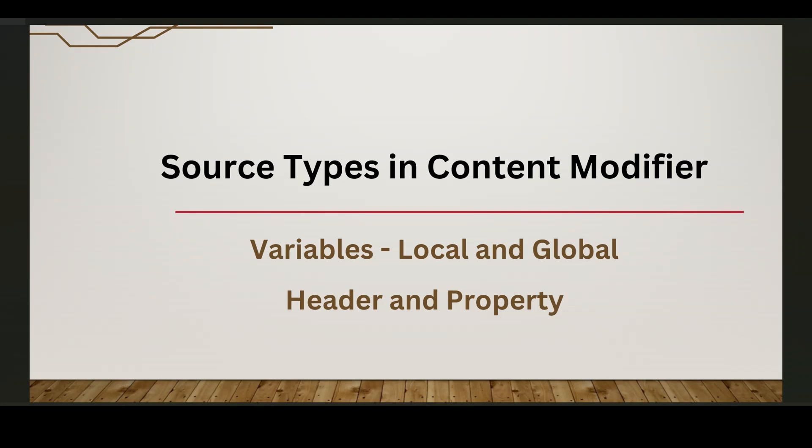Now let's look at what header and property are. Header simply passes a value from one header to a newly created header. We are looking at headers and property from the source types of Content Modifier. Property is the source value depending on the type — either a header name, a property name, a variable name, or any other type. Today we have seen global variables, local variables, header, and property.